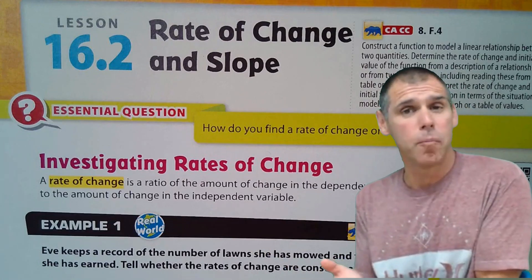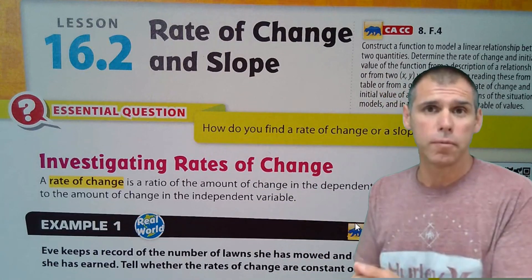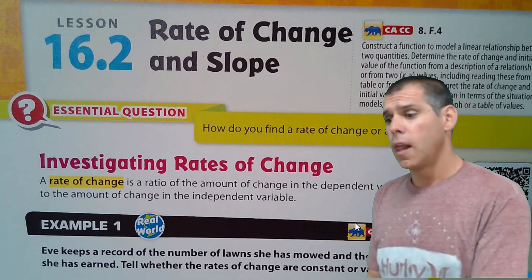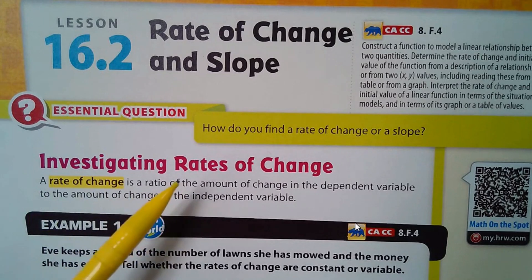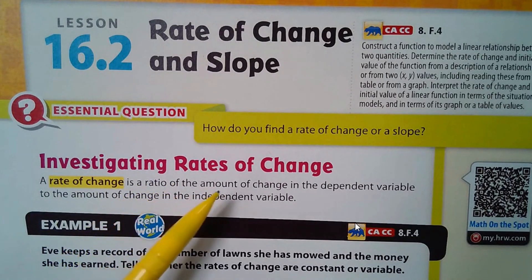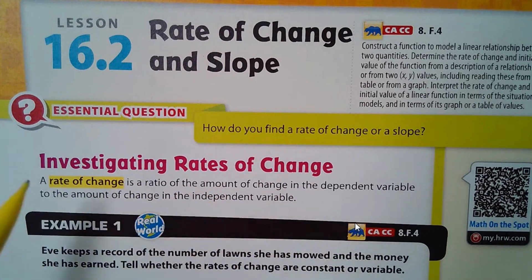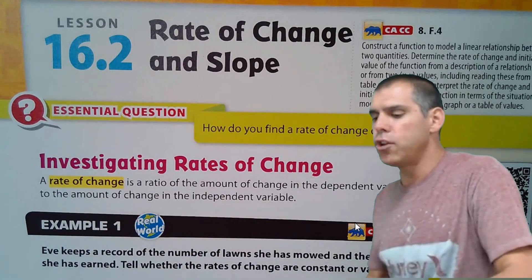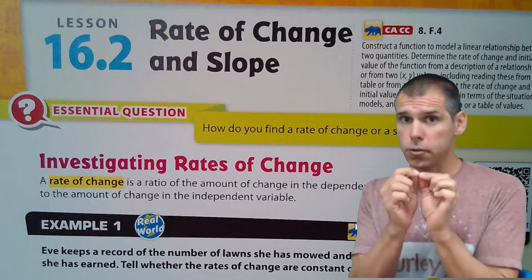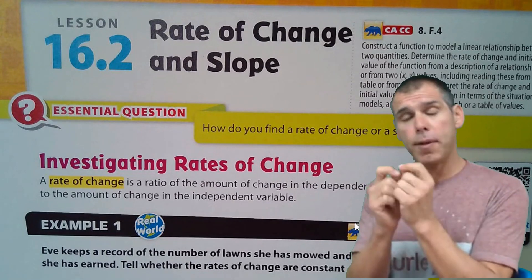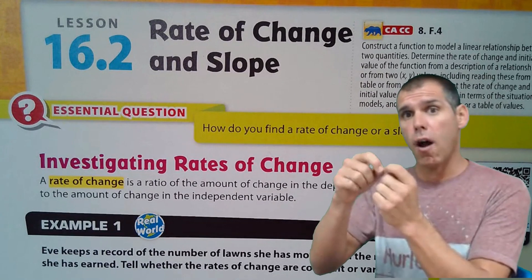Lesson 16.2 on rate of change and slope. Our essential question is: how do you find the rate of change or slope? The rate of change is a ratio — really just a fraction — of the amount of change in the dependent variable to the amount of change in the independent variable. The independent variable is our x-axis, our x values, and the dependent variable is our y-axis or our y values.